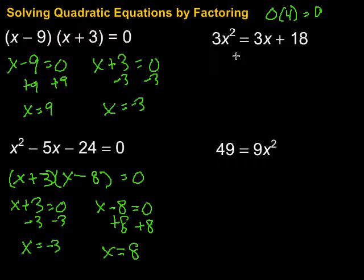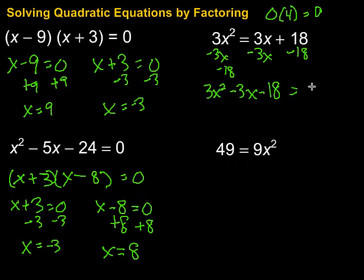So for this next one up here, it's not sitting in a nice form that we can necessarily factor it right away. We want to get it equal to 0 before we start to factor. So let's bring this stuff over here with the x squared. I'm going to subtract 3x from both sides, and I'm going to subtract 18 from both sides. So that's going to give me 3x squared minus 3x minus 18. What's left over here, just 0.